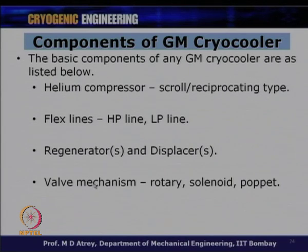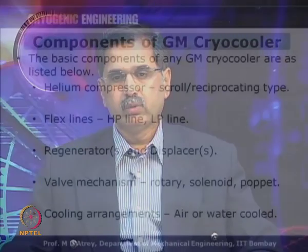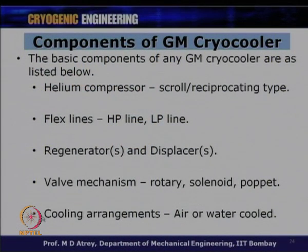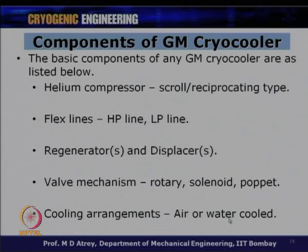The basic components of any GM cryocooler are: a helium compressor (typically scroll type), flex lines (HP and LP), the regenerator and displacer, the cold head, the valve mechanism (rotary valve, solenoid, or poppet), and a cooling arrangement for the helium compressor. The heat of compression is removed by chilled water at around 8–15°C circulated through the compressor. Some compressors are air-cooled.